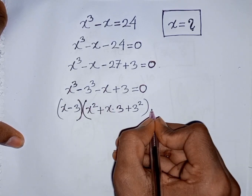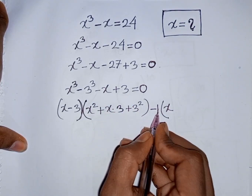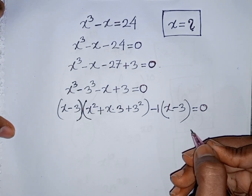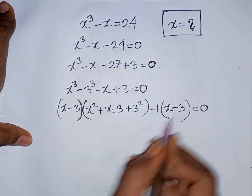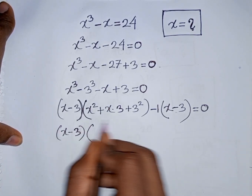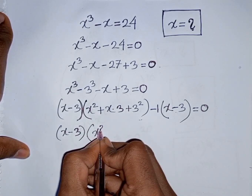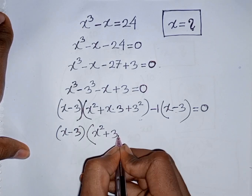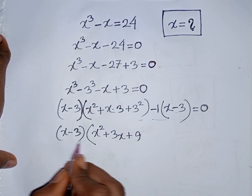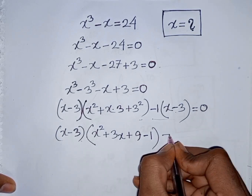From here, we take out common factor minus 1, so minus 1 comes out of the bracket: minus x divided by minus 1 gives x, and plus 3 divided by minus 1 gives minus 3. So we have (x minus 3)(x² + 3x + 9) minus 1·(x minus 3) = 0. Now we take common factor (x minus 3), and (x minus 3) cancels, leaving x² + 3x + 9 minus 1 = 0.